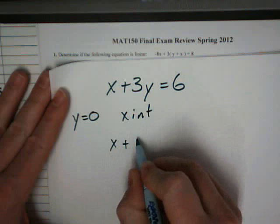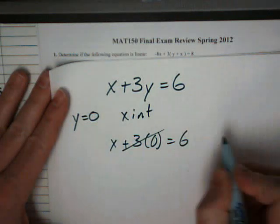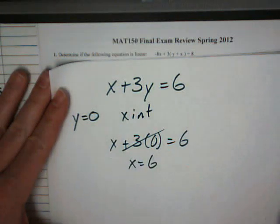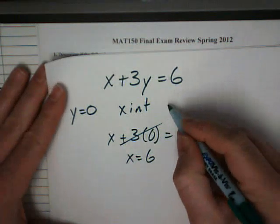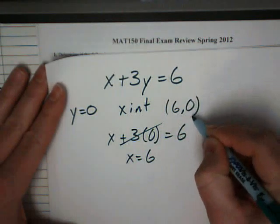And you solve. So x plus 3 times 0 equals 6. That goes away. x equals 6. So your point, the x-intercept, the x value is 6. The y value is 0.